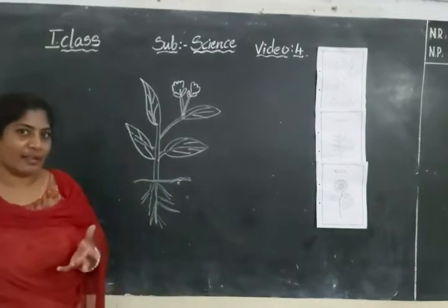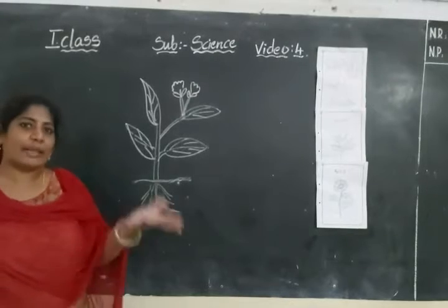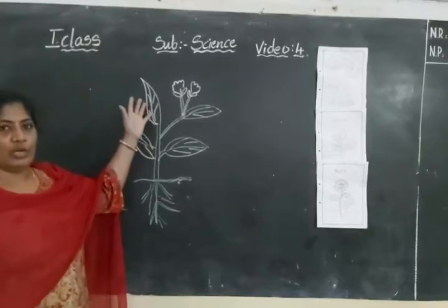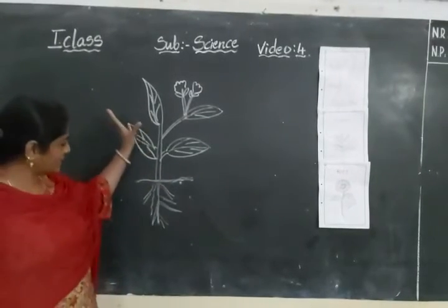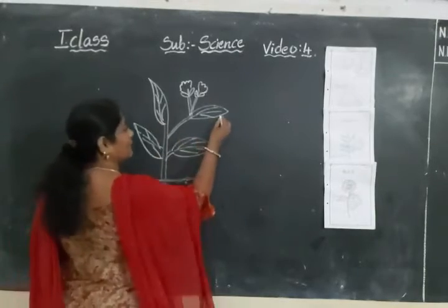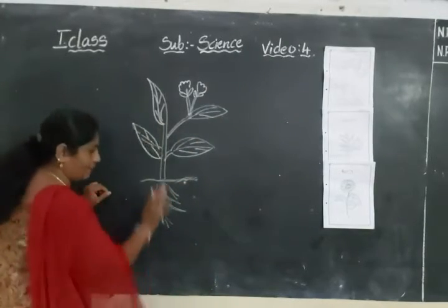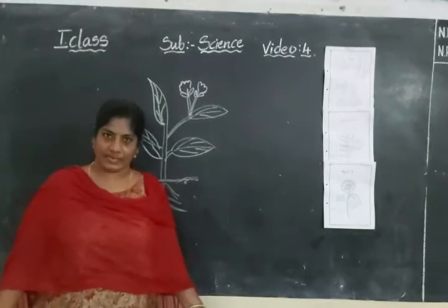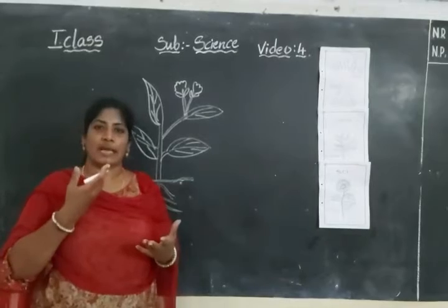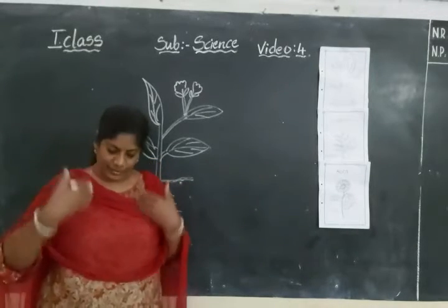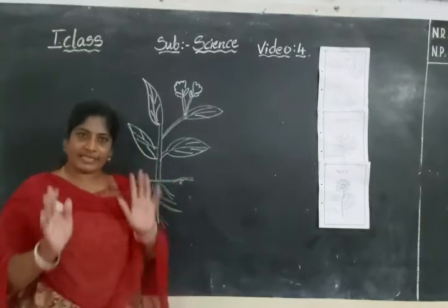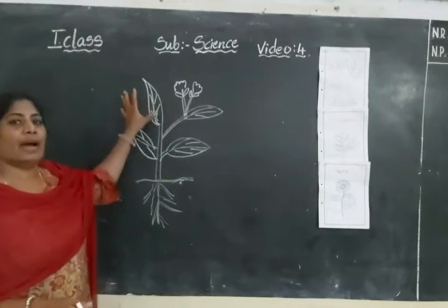In your house, plants are there. Everyone is having plants, no? What is a plant? Look at here — a small plant is there. This is a plant. We are having body parts: head, eyes, ears, nose, tongue, cheeks and everything. We are having hands, legs and everything. In the same way, a plant is also having parts.